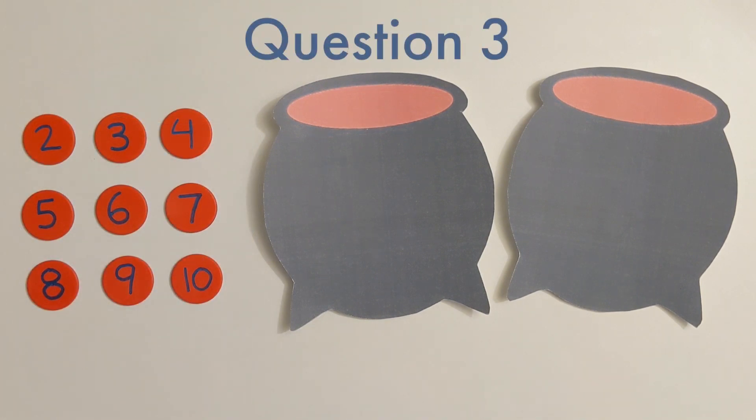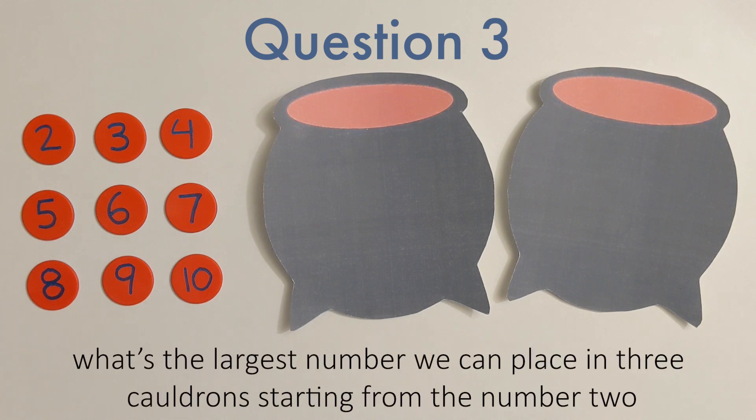For the third question, we're back to 2 cauldrons. It's very similar to our first question, only this time, rather than starting with the number 1, we're going to start with the number 2, following all the same rules the first question did. Again, we want to find the largest possible number we can place without causing either cauldron to explode.